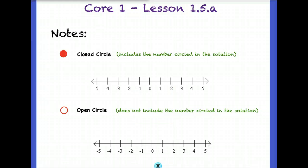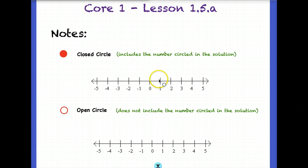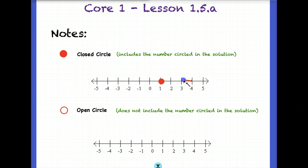A couple of things that are important to know: what does a closed circle versus an open circle represent? So when you have a number line, if you want to include one of the numbers as part of your solution, you would draw a closed circle around that. For example, if I decide that the number 1 is going to be part of my solution, I would draw a closed circle around it, and if every number greater than 1 is also in my solution, I would draw a line in that direction.